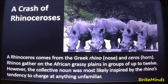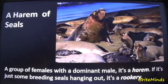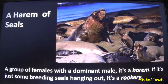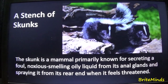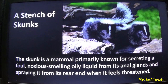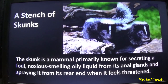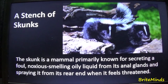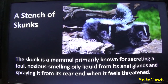The collective noun for rhinos was most likely inspired by the rhinoceros's tendency to charge at anything unfamiliar. A group of seals is called a harem — a group of females with a dominant male. If it's just some breeding seals hanging out, it is a rookery. A group of skunks is called a stench of skunks. The skunk is a mammal primarily known for secreting a foul, noxious-smelling oily liquid from its anal glands and spraying it when it feels threatened.